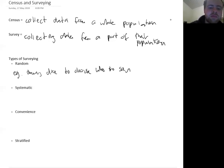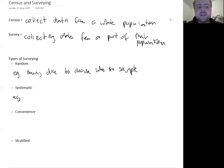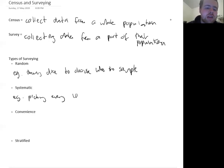Systematic sampling is a bit different. It's where you go through a list of the population and have some kind of systematic way of choosing who you're going to sample. It might be, for example, picking every tenth name on an alphabetical list. That way you're only sampling one tenth of the population, but there's a systematic approach to it. Even though the alphabetical list is a kind of arbitrary thing, there's still a logical way in which you're going through and sampling.